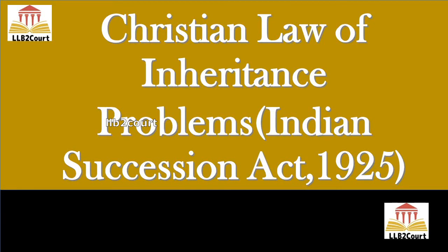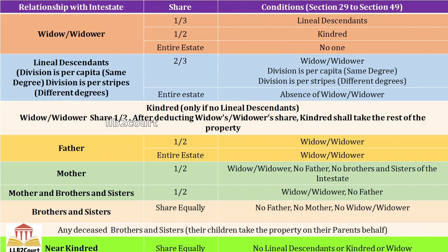Hi everyone, today we will try solving problems in Christian law of inheritance. We know that sections 29 to 49 in the Indian Succession Act 1925 deals with intestate rules for Indian Christians. So today we will solve some problems with the help of those provisions. I've already created videos detailing those provisions. An intestate is a person who died without making a will, so after his death his property will be devolved based on sections 29 to 49.